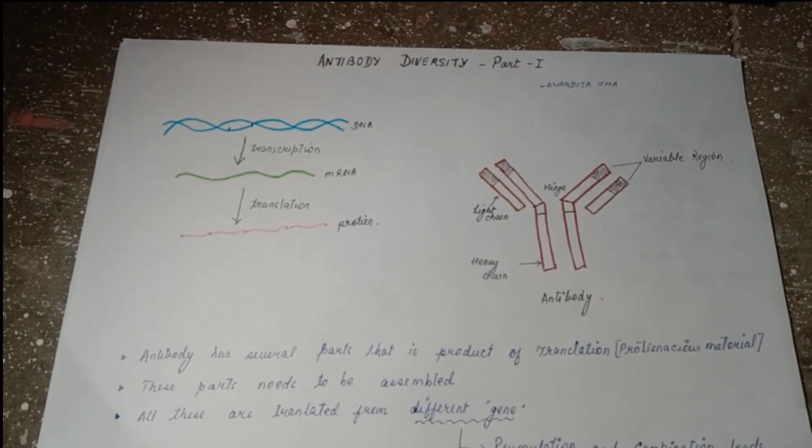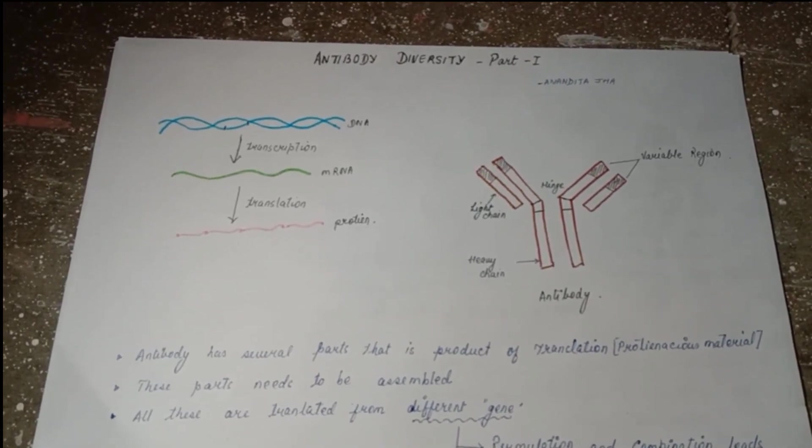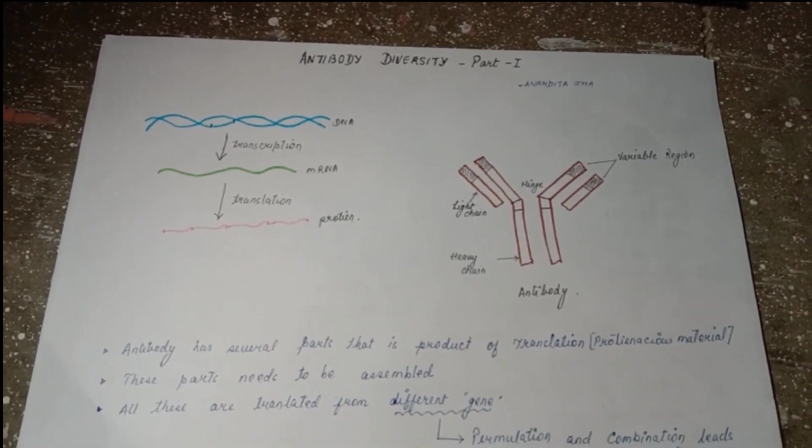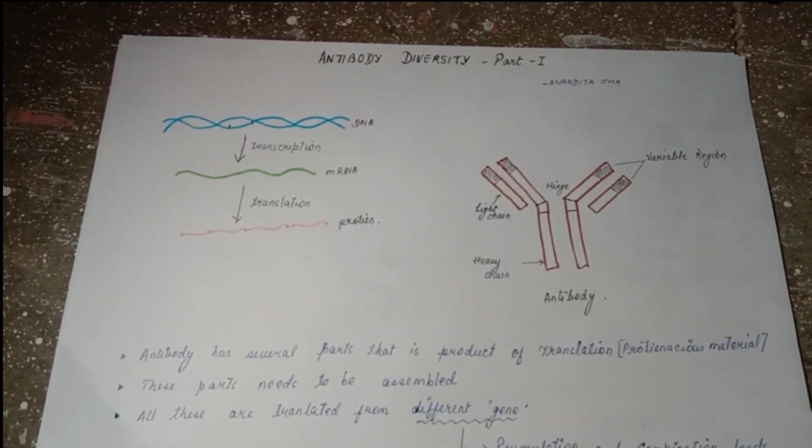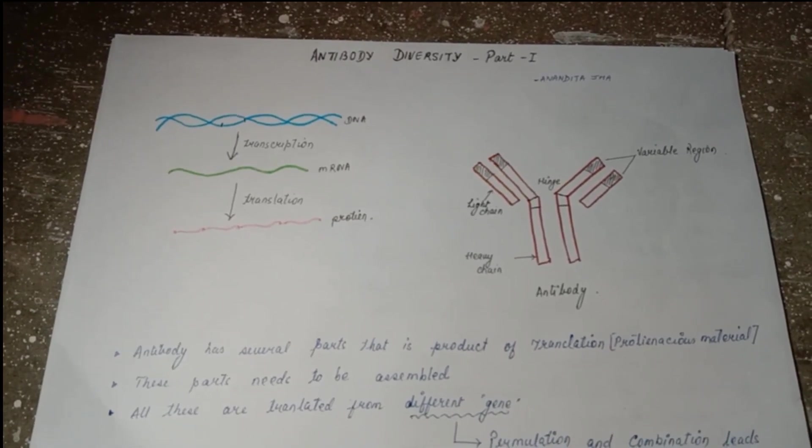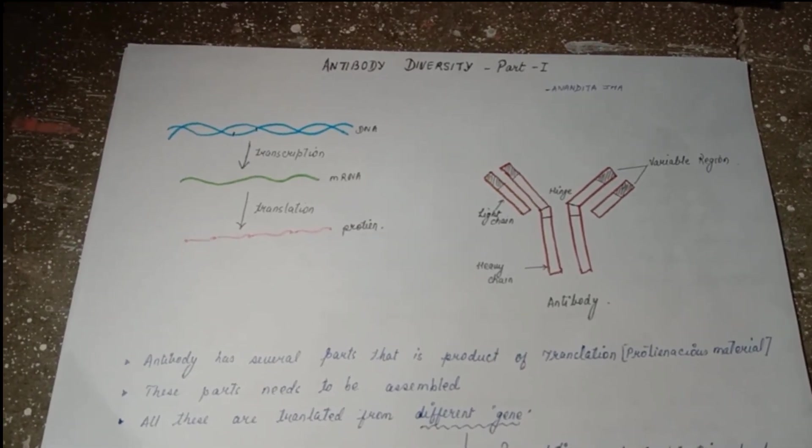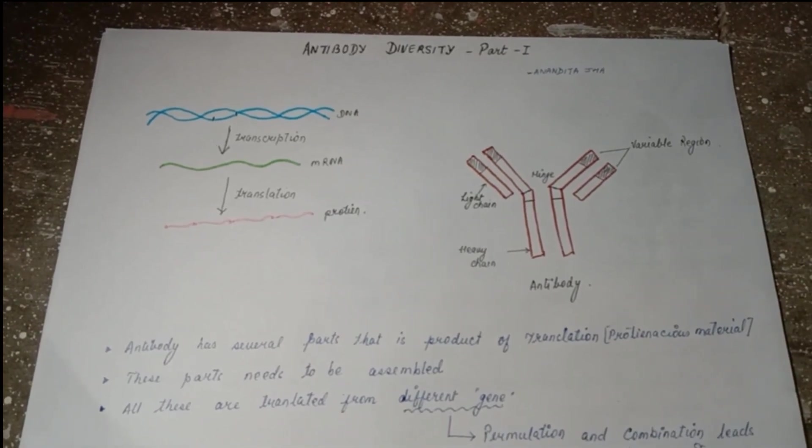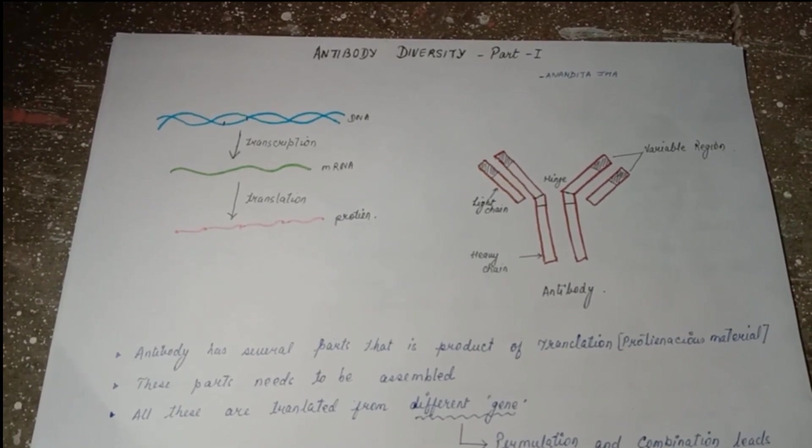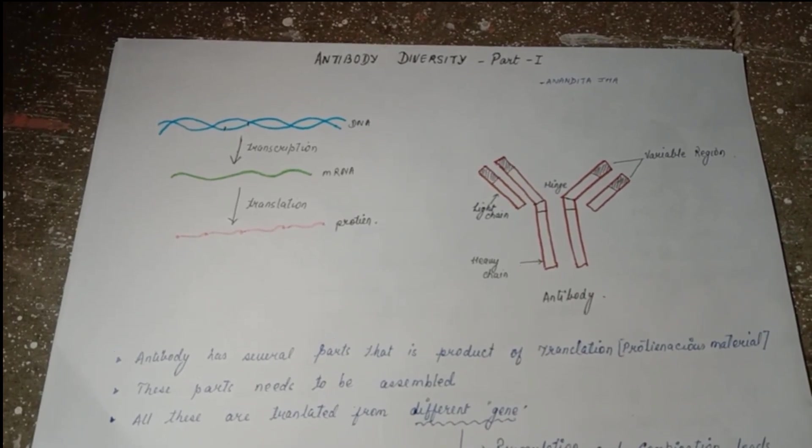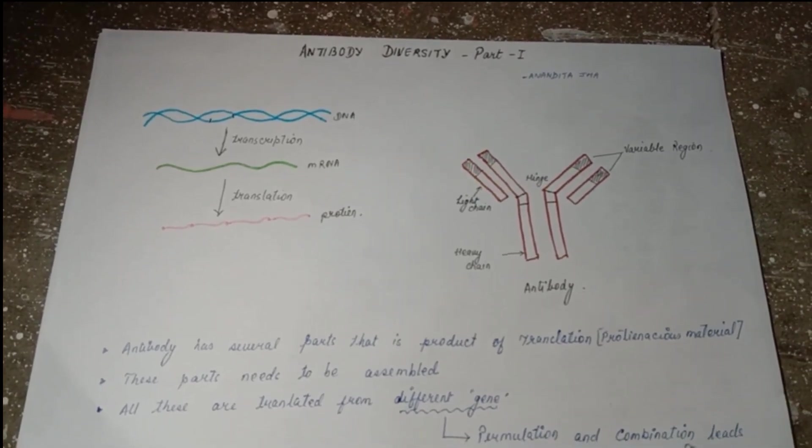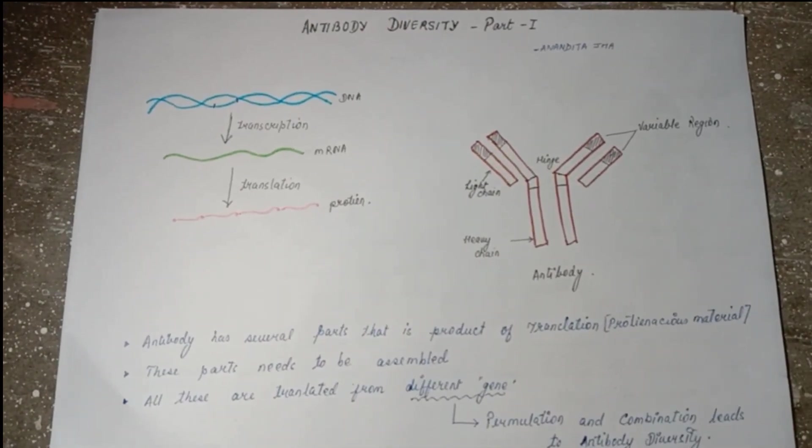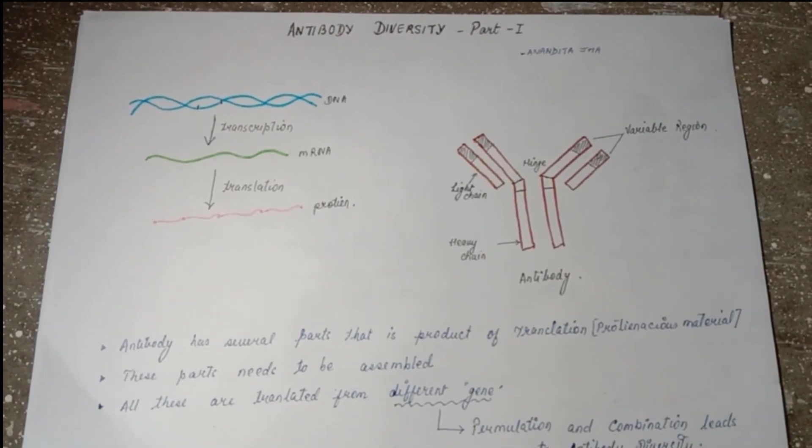There are a lot of antigens, right? Foreign particles entering our body. But our immune system has the ability to make antibodies against not many, but many antigens which are foreign to our body. How these things are happening is something called diverse theories given for that, and this is the beauty of the immune system or immunology.